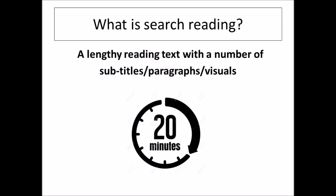Search reading is a lengthy reading text with a number of subtitles, paragraphs and visuals. These visuals can be pie charts, tables or bar graphs. That means you will have a five or six page long reading text, divided by subtitles to make it easier for you to find the information you are looking for. Sometimes there can be charts and you might need to look at these carefully too.